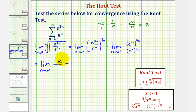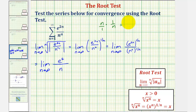So the numerator is now just e squared. For the denominator, we'd have n raised to the power of n times one over n. Since these are reciprocals, the product will be one — n times one over n simplifies to n over n, or just one. So now we find the limit as n approaches infinity of e squared divided by n. Since the numerator is just a constant and the denominator increases without bound, this limit will equal zero.